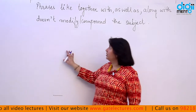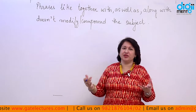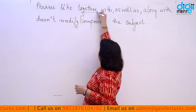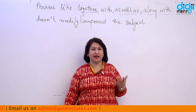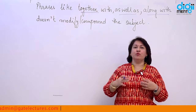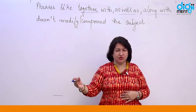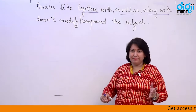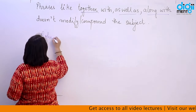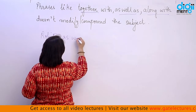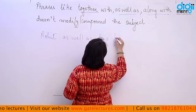The next rule: if two subjects are joined using phrases like 'together with,' 'as well as,' or 'along with,' these phrases do not modify or compound the subject. The verb is determined by the first subject only, not the second one. For example: 'Rohit as well as his friends...'